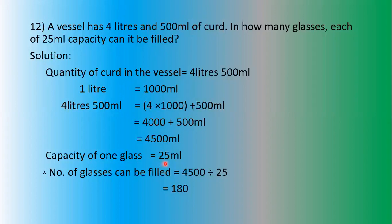How many glasses can be filled? Number of glasses = total curd in the vessel ÷ capacity of one glass, that is 4500 divided by 25. First take 45 — 25 once is 25, remainder 20. Bring down one zero from the dividend; it becomes 200. 25 goes into 200, and one zero is left which we bring into the quotient. The answer is 180 — 180 glasses can be filled from the vessel of curd.